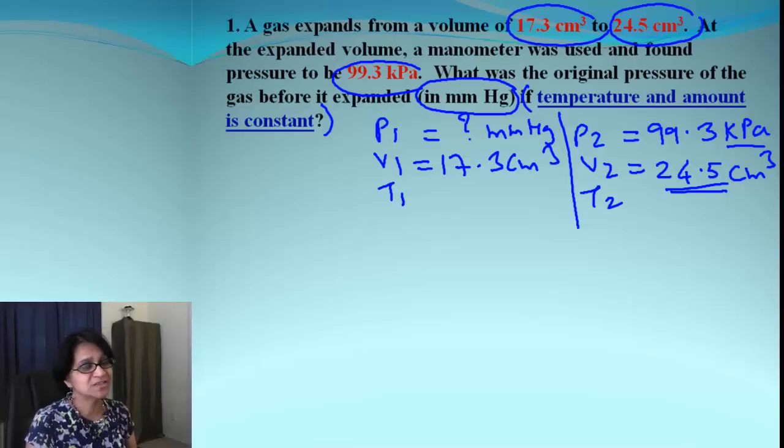So we got some conflicting situation there because we need to make sure the units are same. How about temperature? Temperature and amount is constant. So you can just put that both T1, T2 are equal to T. They are same values.